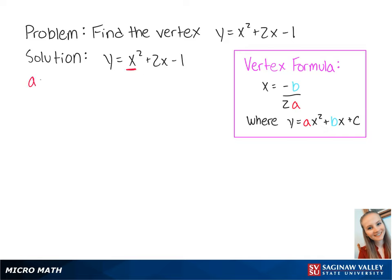For this equation, a equals 1 and b equals 2. If we plug these numbers into the formula, we get x equals negative 2 over 2 times 1,